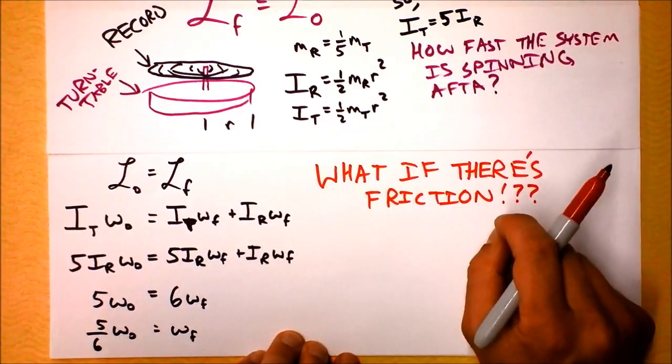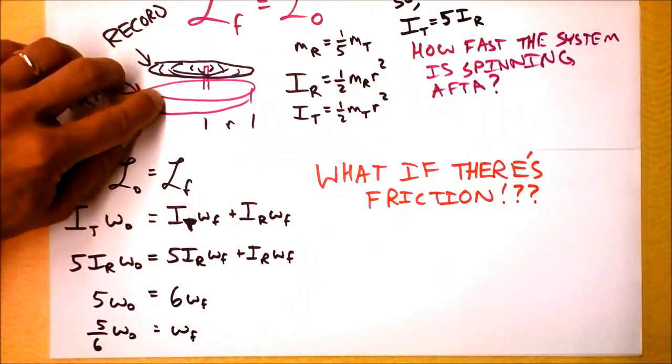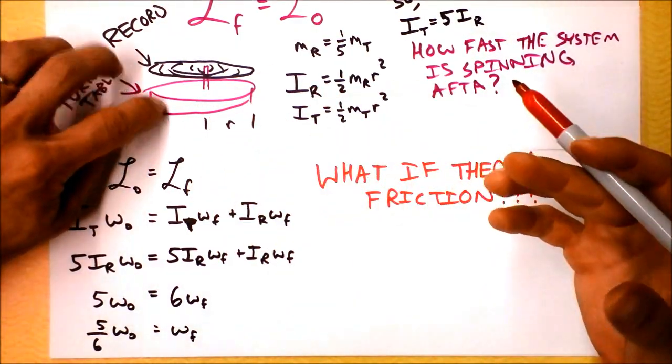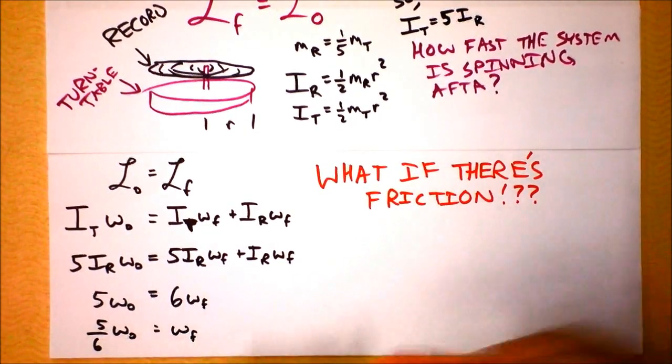What if there's friction? So that as they collide, the record very gradually gets up to speed. And the turntable very gradually gives up some of its angular momentum to the record. And I would argue that, in fact, we can turn this around and say, what if there's no friction?